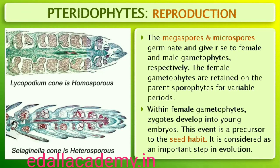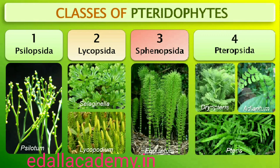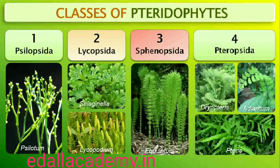This event is a precursor to the seed habit, considered an important step in evolution. The pteridophytes are further classified into four classes: Psilopsida (Psilotum), Lycopsida (Selaginella, Lycopodium), Sphenopsida (Equisetum) and Pteropsida (Dryopteris, Pteris, Adiantum).